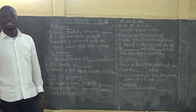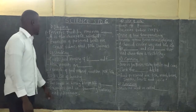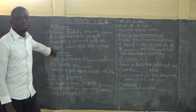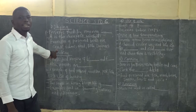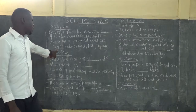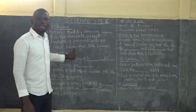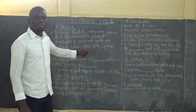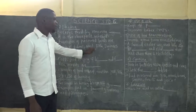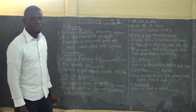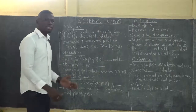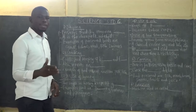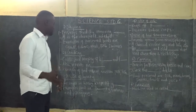Examples of foods preserved by drying include: cereals such as maize, sorghum, millet, barley, wheat, and rice; tubers like cassava; meat, which was preserved by drying long ago; fish — some of you have seen dry fish being sold at the market; and legumes such as beans, soya beans, and green grams.